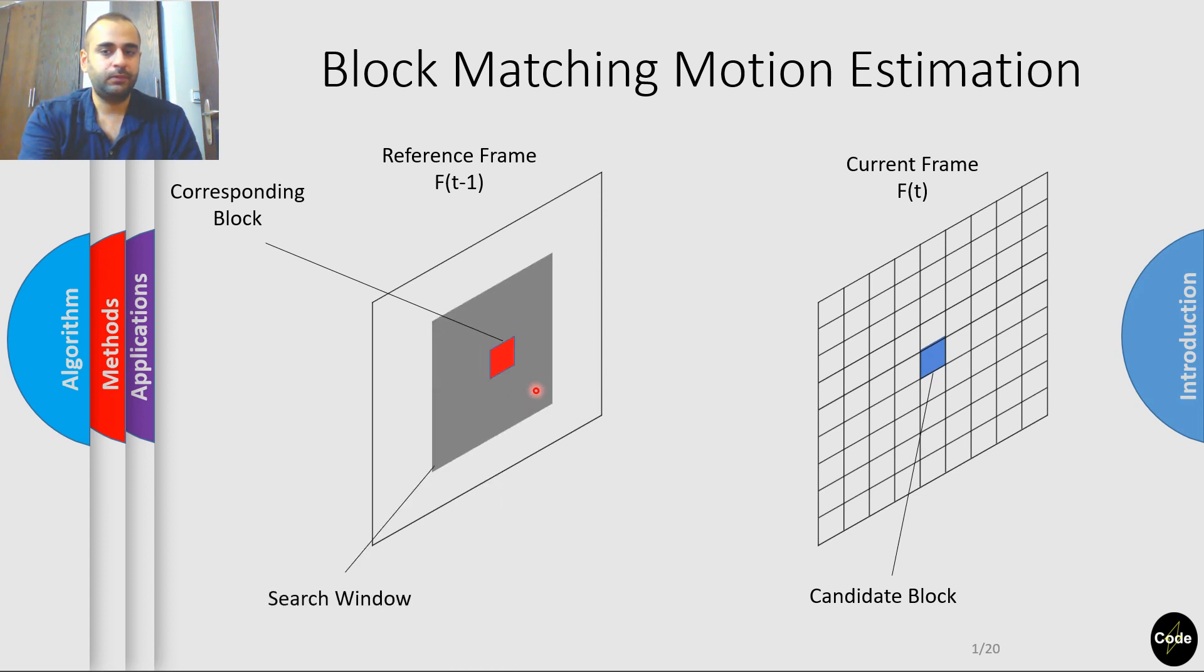The search is performed within a predefined area known as the search window. Once we find the best match or the best block, we report the vector that points from the corresponding block in the reference frame to this best match.